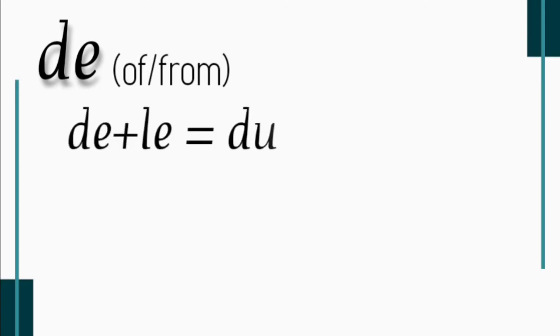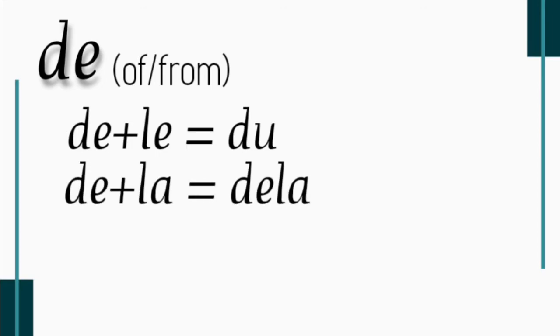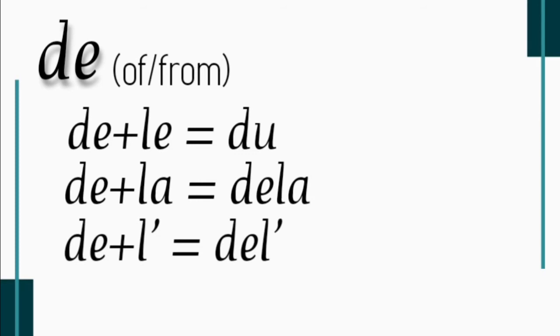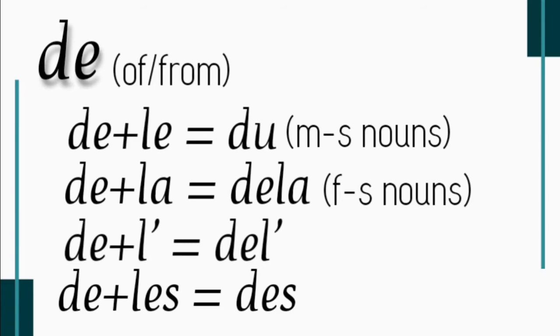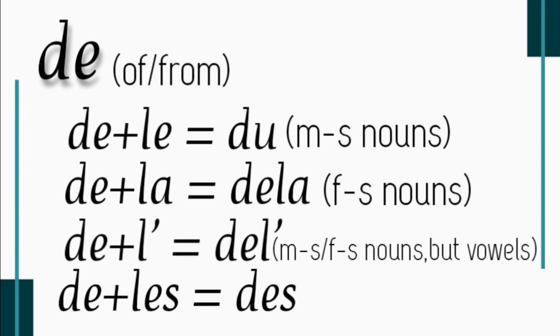Now let's look at the second part of les articles contractés, which is de. As already mentioned, de means 'of' or 'from'. Adding les articles définis to de gives us 'of the' or 'from the'. De plus le becomes du, de plus la becomes de la, de plus l' becomes de l', and de plus les becomes des. Du is used with masculine singular nouns, de la with feminine singular nouns, de l' with singular nouns starting with a vowel, and des with masculine or feminine plural nouns.